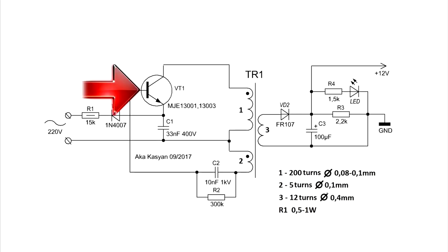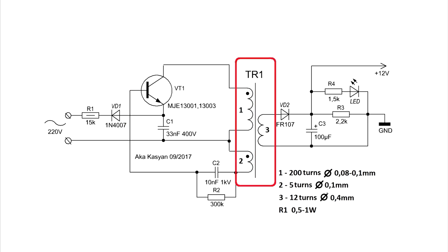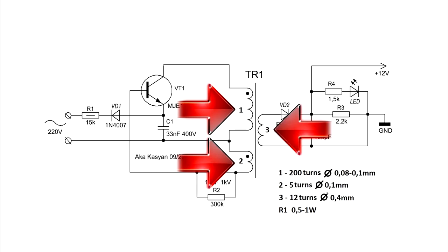At the input of the circuit, a current limiter is installed—it is resistor R1. Then through a half-wave rectifier, the voltage is applied to the generator circuit. The pulse transformer has three windings: a collector or primary winding, a base winding, and a secondary winding.